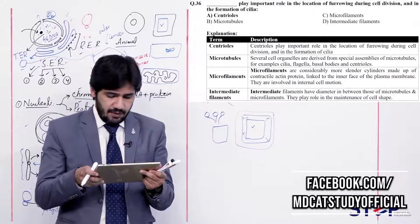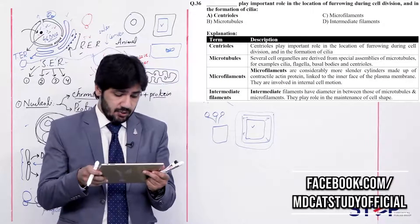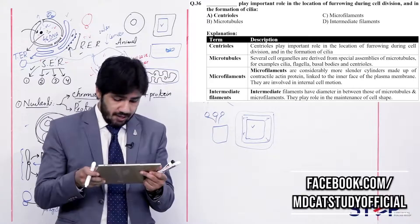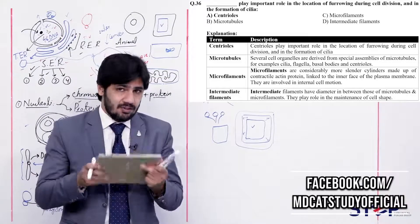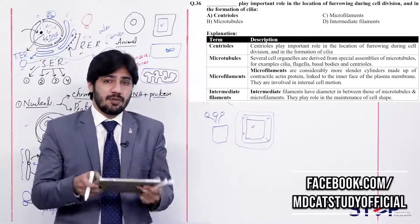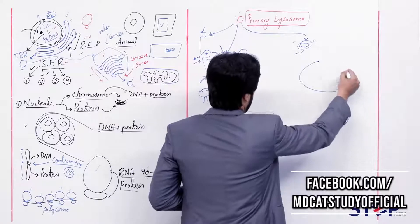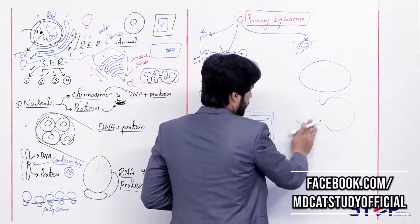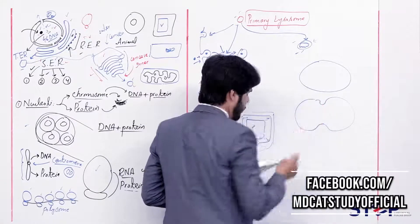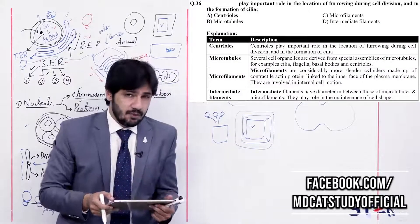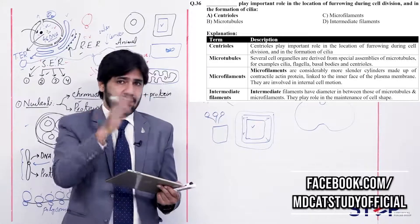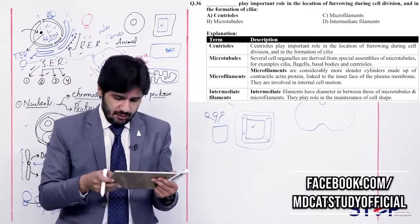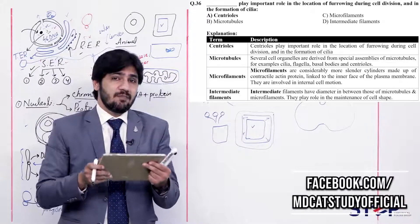Question 36: Blank plays an important role in the location of furrow during cell division and in the formation of cilia — (alpha) centrioles, (beta) microtubules, (charlie) microfilaments, (delta) intermediate filaments. In animal cell cytokinesis, the membrane moves inward and the point of furrow is defined by the centriole. Right answer is alpha — centrioles. Microtubules are involved in formation of centrioles. Microfilaments are involved in internal cell motion. Intermediate filaments maintain cell shape.